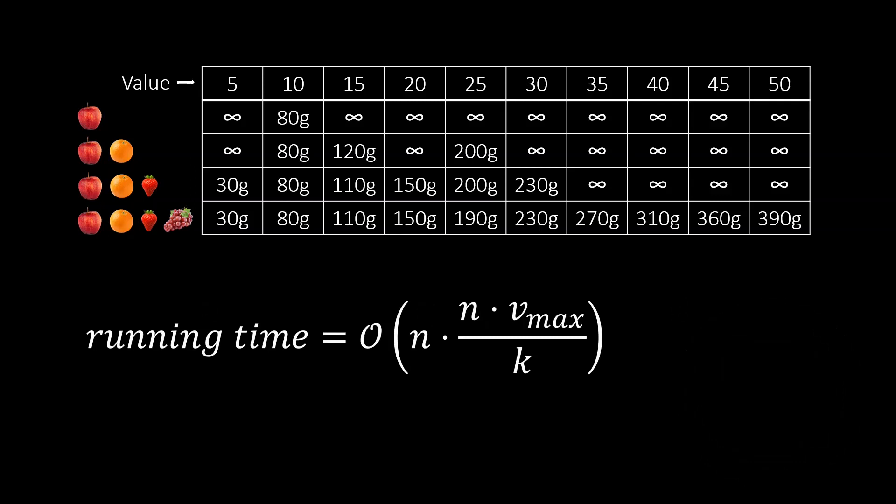When there are n fruits, the table has n rows. What about the number of columns? All fruits together are not more valuable than n times the largest value of a fruit. So we only need to have columns up to this value. Furthermore, after rounding to multiples of K, we only need to check every value divisible by K. So the number of columns is n times Vmax over K.